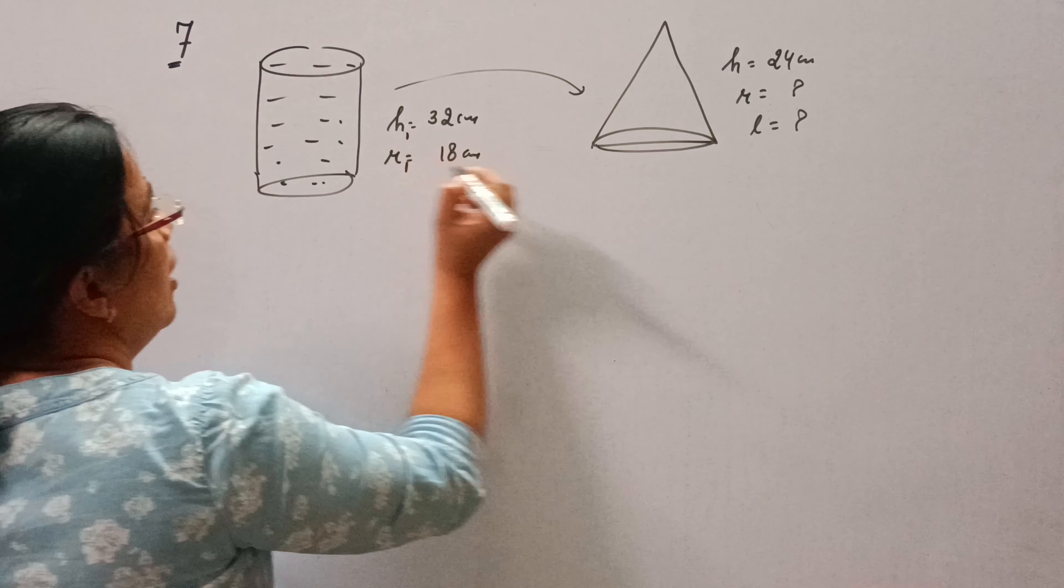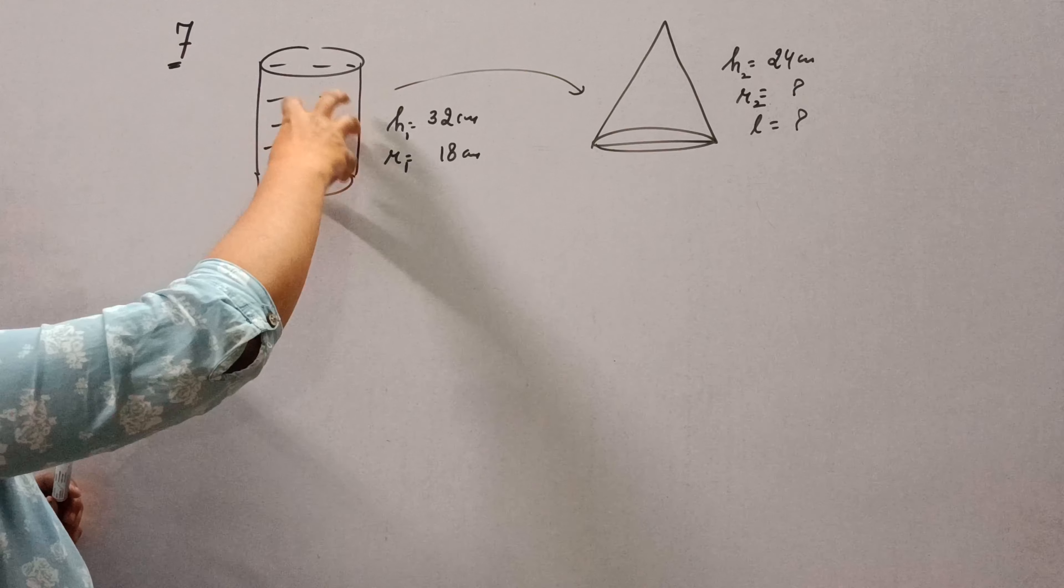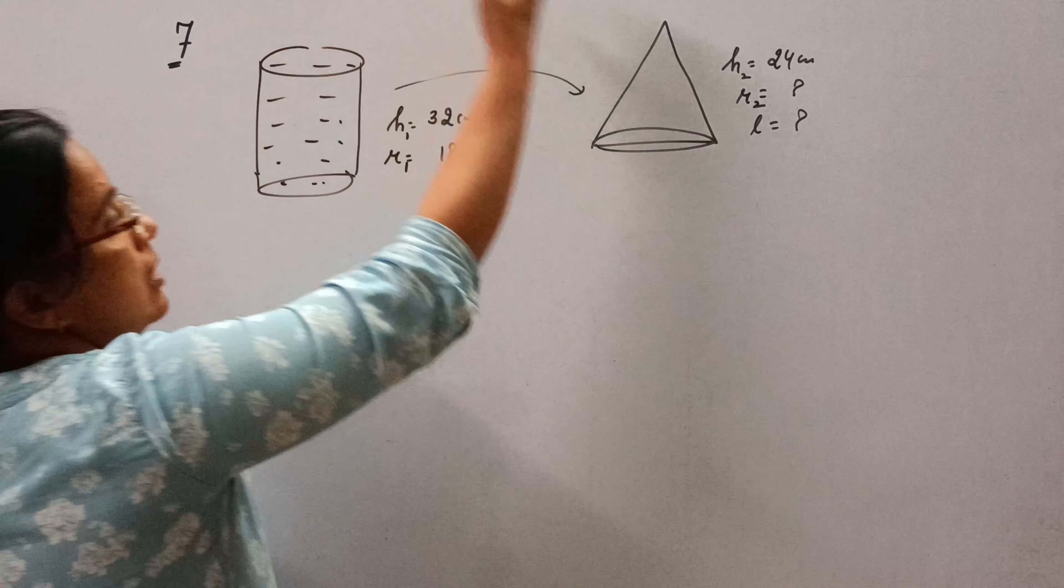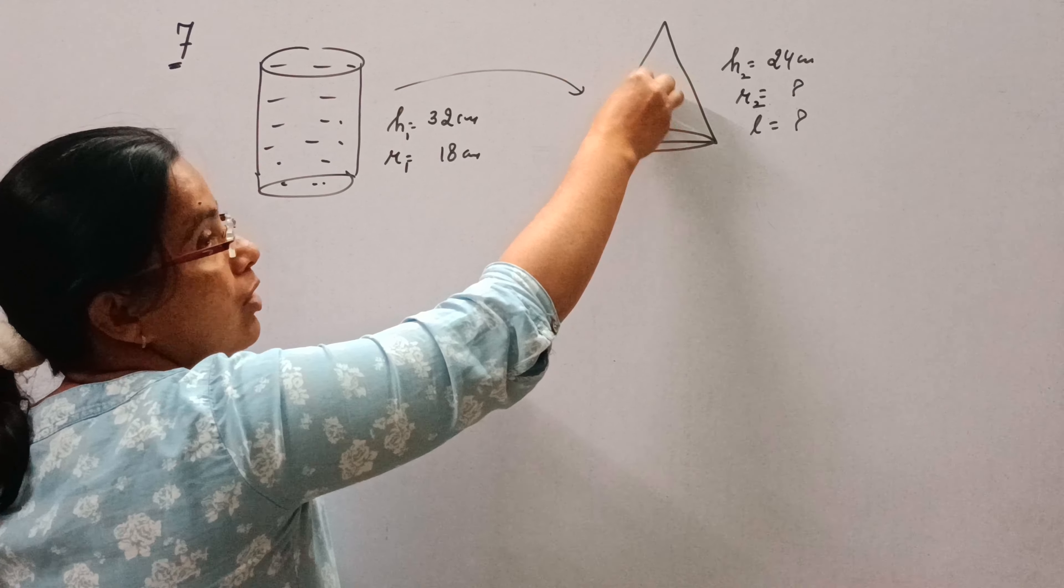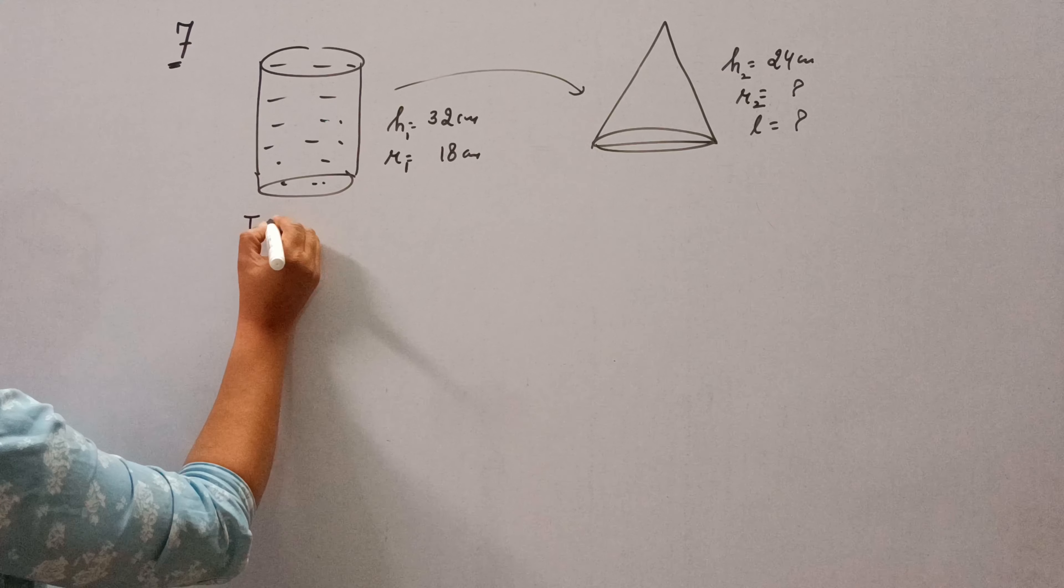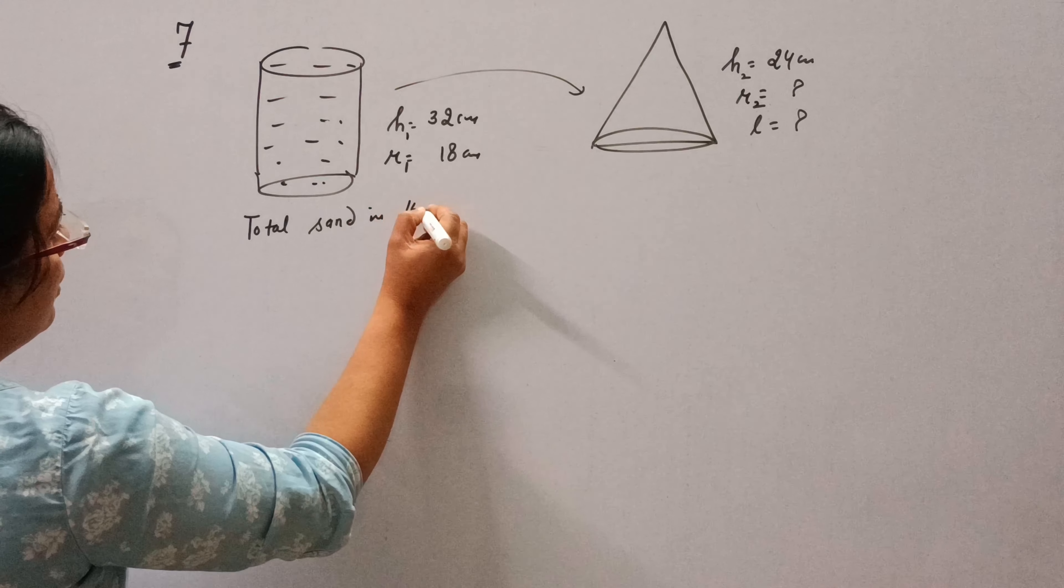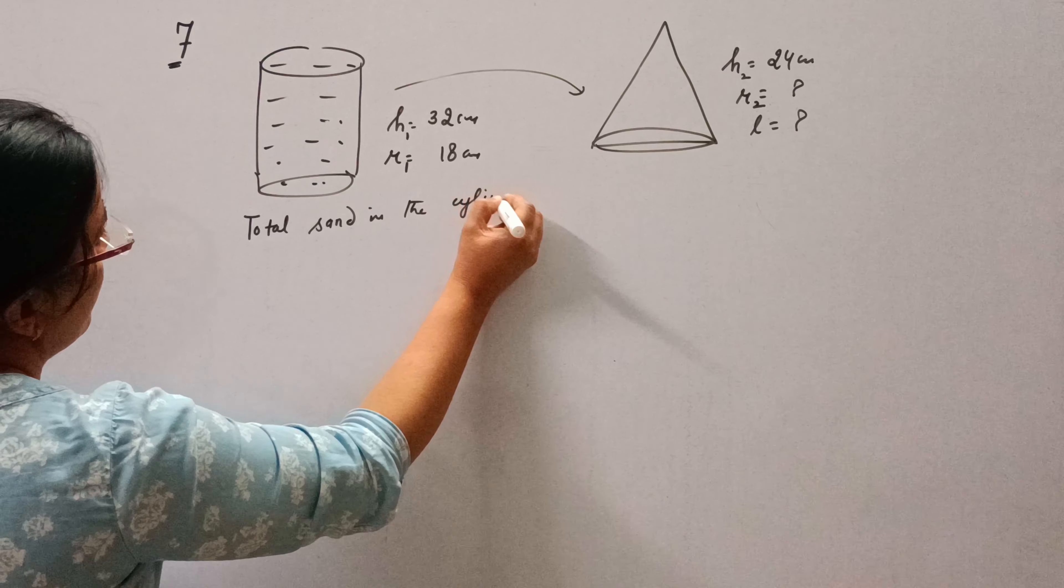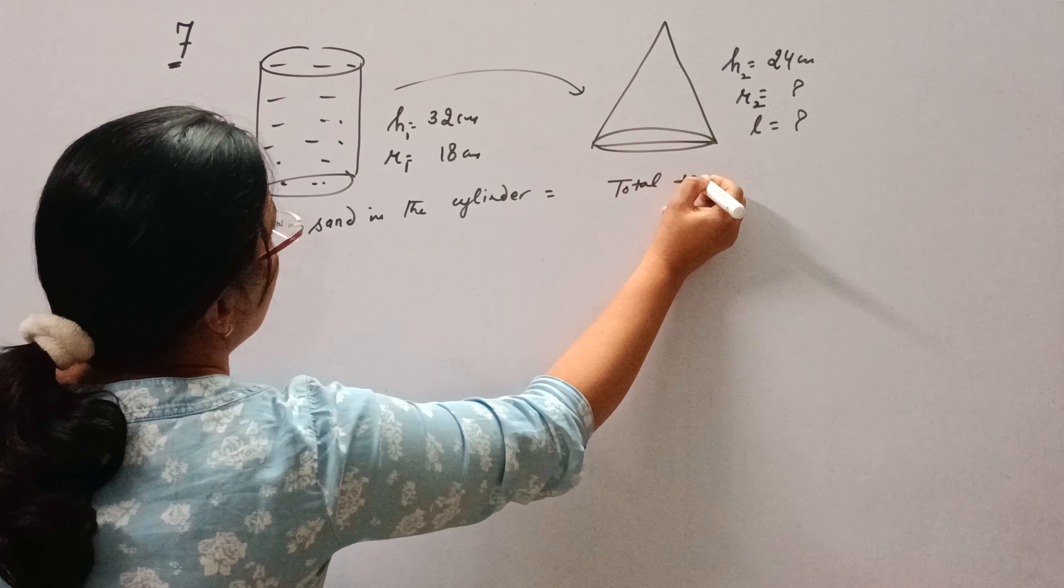Now this is H1, R1 and this is H2, R2. Because the sand filled in the cylinder is emptied on the ground and it takes the conical shape, total sand in the cylinder is equal to total sand in the heap.